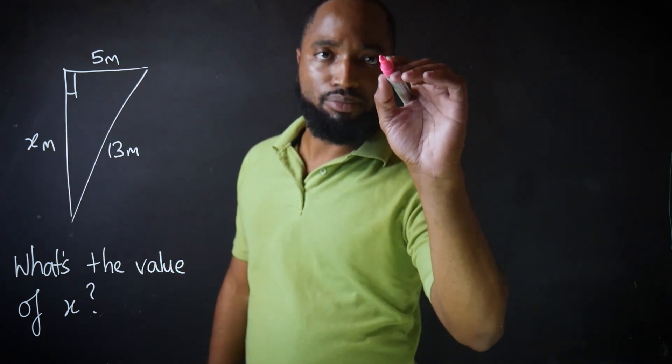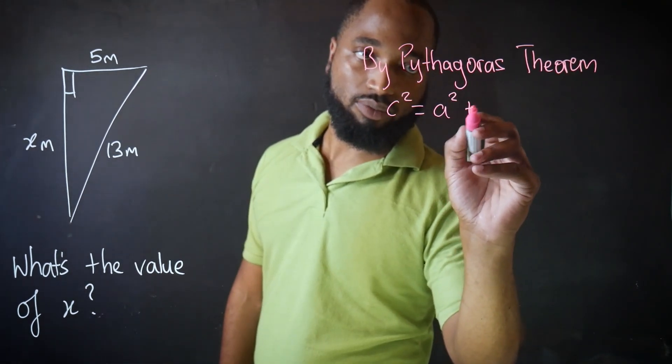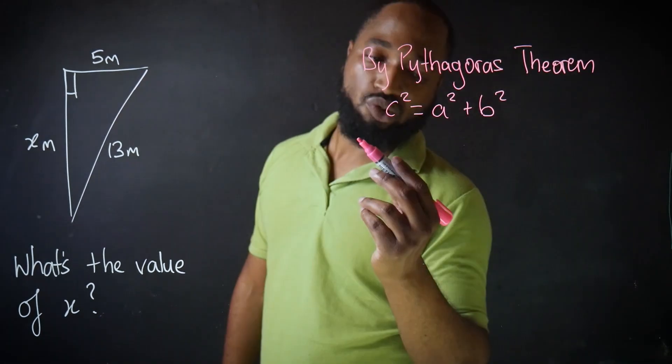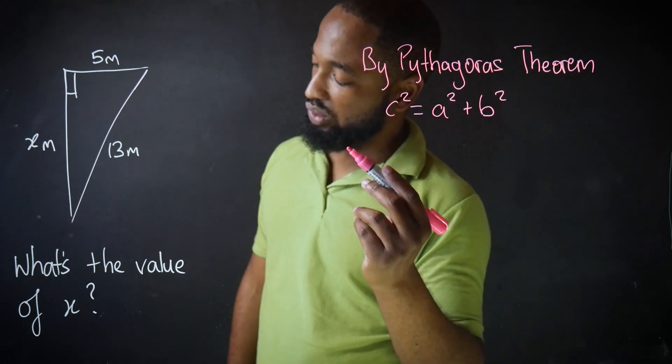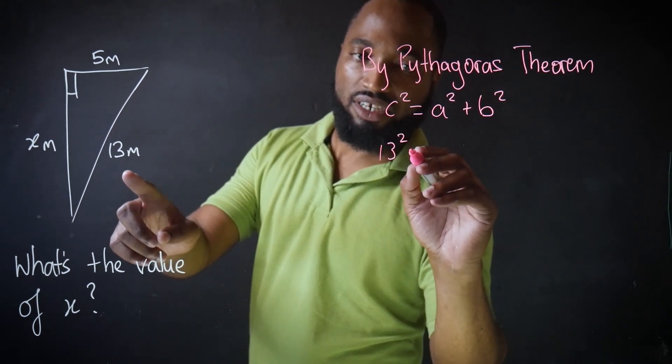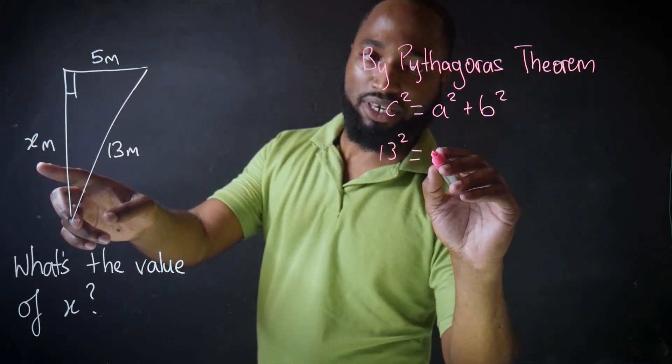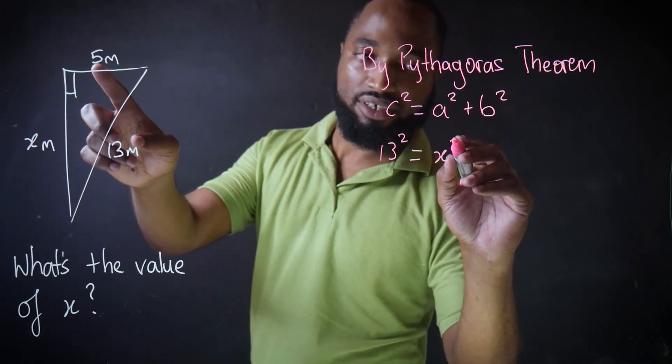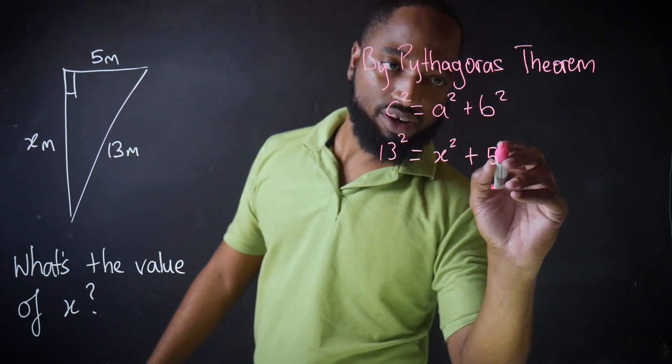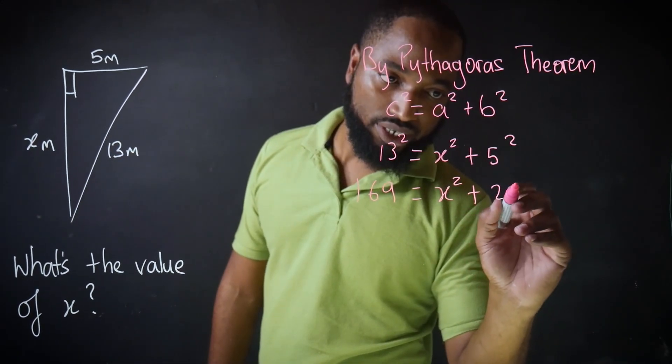By Pythagoras' theorem, C squared is equal to A squared plus B squared. Why am I writing in pink? C is 13. A is, let's make A X. B is 5. And just go through with the algebra.